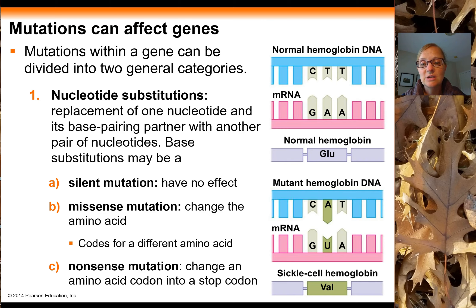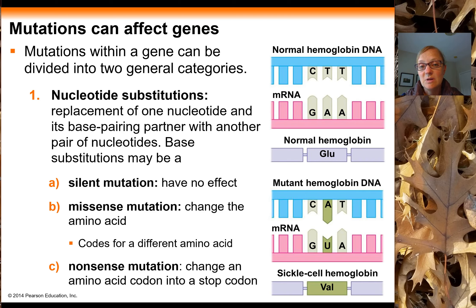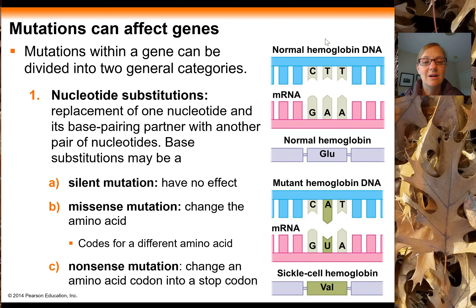The second situation is a missense mutation, where substituting a new nucleotide actually changes the amino acid — it ends up coding for a completely different amino acid. This is what happens in sickle cell. On the right side, we have the sickle cell example. At the top is normal hemoglobin DNA, which at a particular part of the gene has a CTT codon. In the mRNA, that codes as GAA, and GAA codes for the amino acid glutamic acid — that's the normal case.